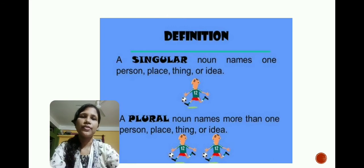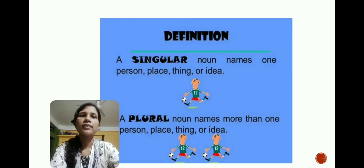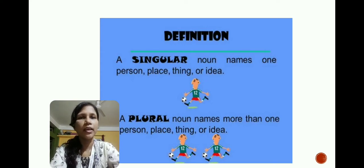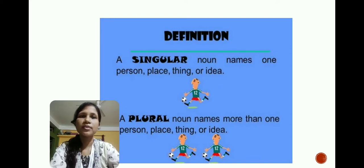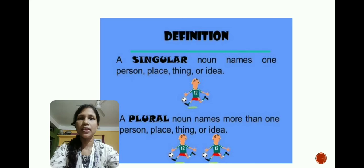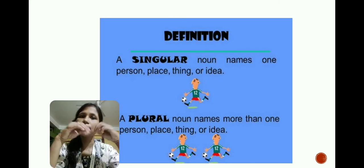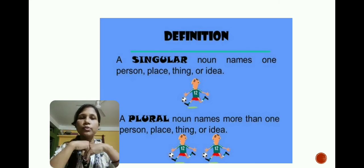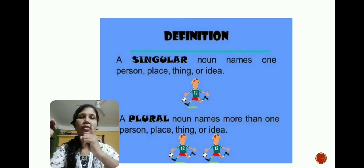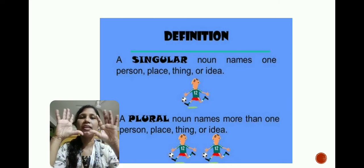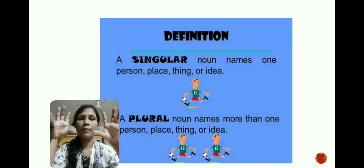Now the definition. What is the definition of singular and plural nouns? A singular noun names one person, place, thing, or idea. When we say singular noun it represents only one, and when we say plural it represents many. Singular means one and plural means many. For example, this is one single finger, and these are many fingers — that represents plural.